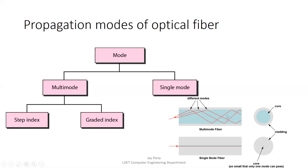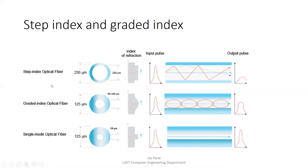In step index multimode fiber, the refraction index of the core changes in discrete steps. In graded index fiber, the refraction index increases continuously toward the center of the core and decreases as you move away from the center. If the change in refraction index is continuous, it is graded index; if discrete, it is step index.